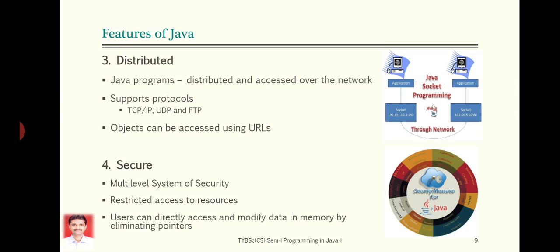Next feature of Java is that we can develop secure applications with the help of Java language. Java addresses various security issues by putting in place a very rigorous multi-level system of security. It enforces security by restricting access to different resources. It eliminates the pointer and so Java ensures that user cannot access and modify the data in memory because pointers are not explicitly used by programmers or users.